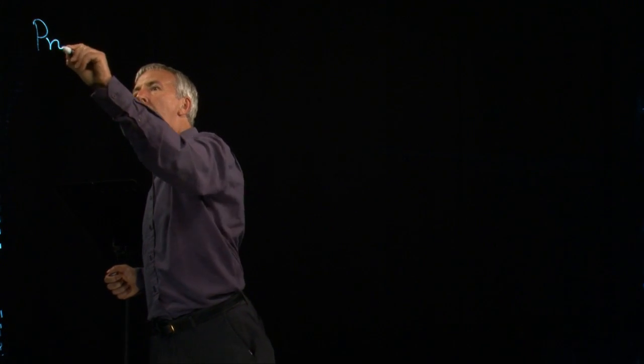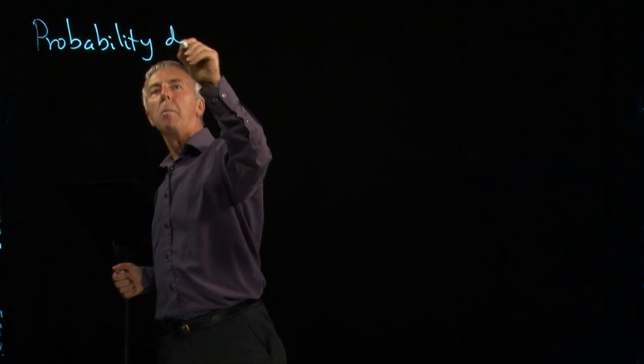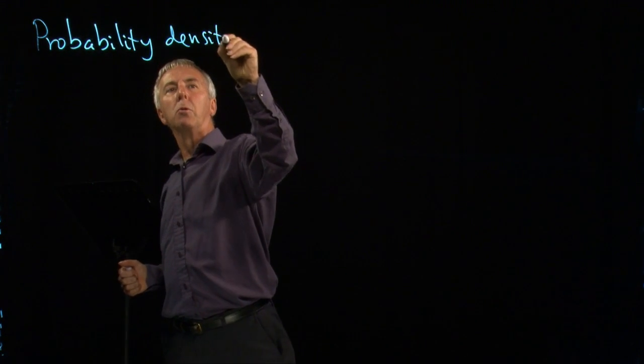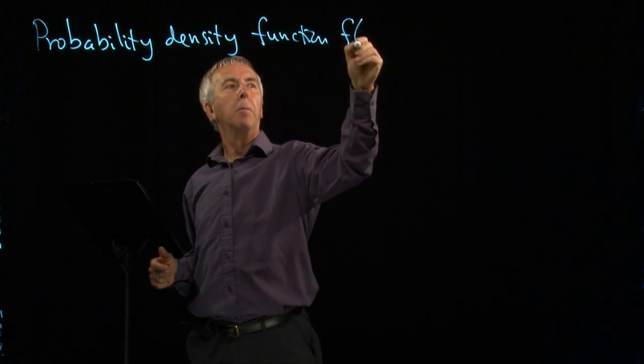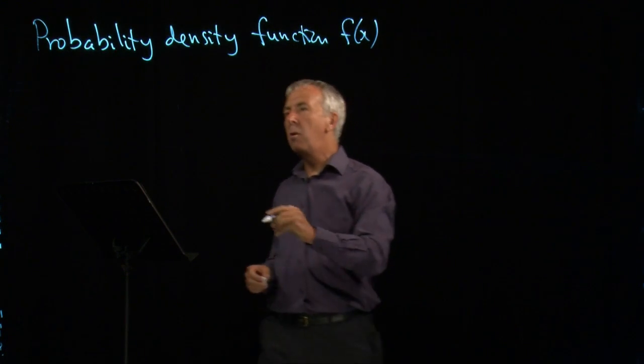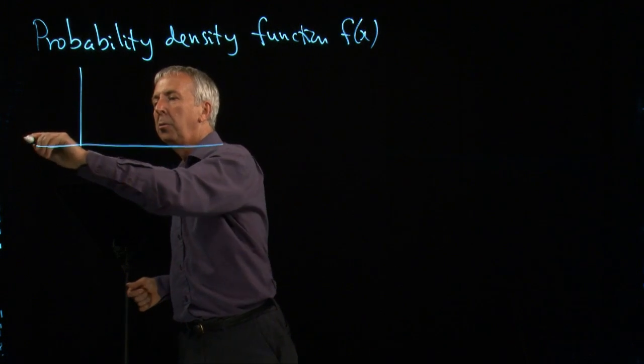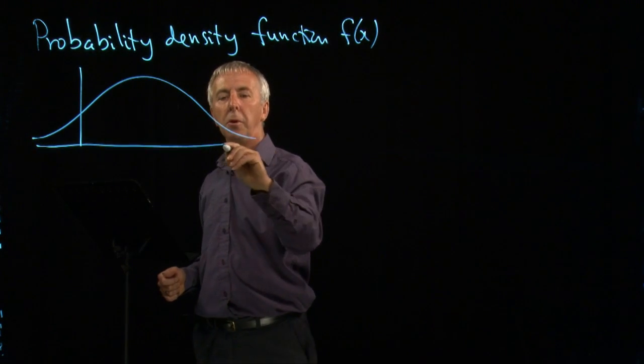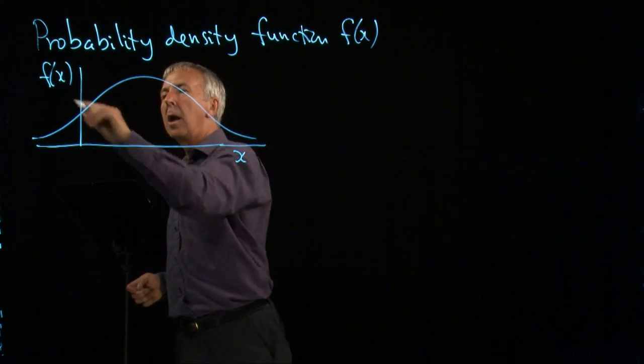So we now talk about continuous probability distributions as opposed to the previous discrete ones. And to analyze these, we need something called the probability density function, which we'll call little f, which depends on the value. And we can look at a graph of little f, all sorts of different examples. Here's one possibility. Here's x, here's f of x.